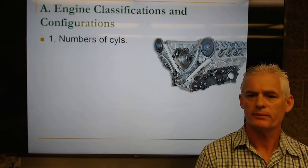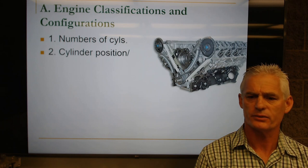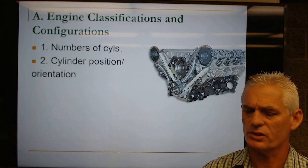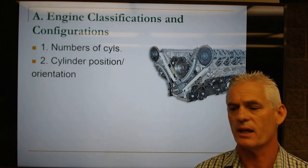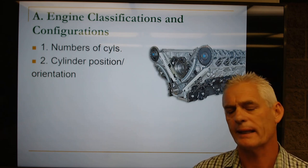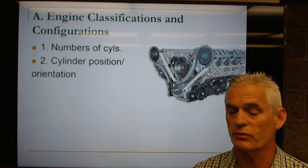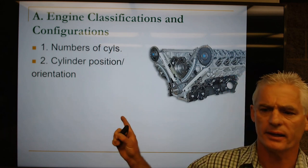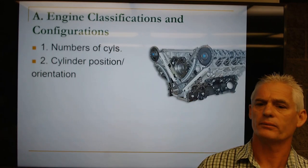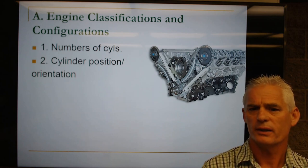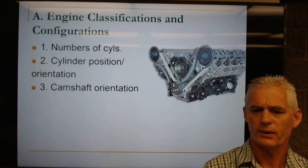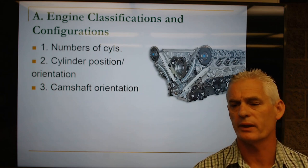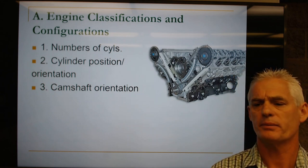There is a three-cylinder as well. Here you've got a V8 overhead cam forward engine as an example. Camshaft orientation is next — is the camshaft in the block or is it up in the cylinder heads? Where is it in relationship to the combustion chamber? And then valve location and number — are the valves in the block, are they in the cylinder head, and how many do we have?